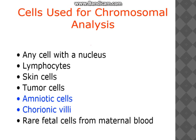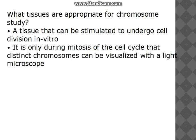Which cells are used for chromosomal analysis? Ideally any cell with a nucleus can be used, but we must use a cell that is actively dividing. Mostly the cells used are lymphocytes and skin cells. Tumor or cancerous cells are used to identify specific mutations. Amniotic and chorionic villi cells are taken to look for genetic disorders present in the fetus. The appropriate tissue is one that can be stimulated to undergo cell division in vitro, because it is only during mitosis that we can visualize the chromosomes.